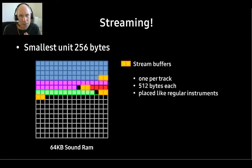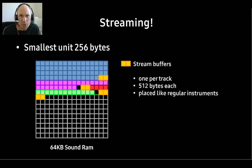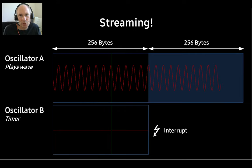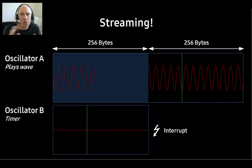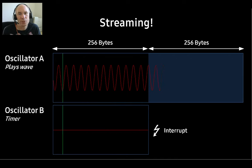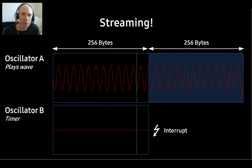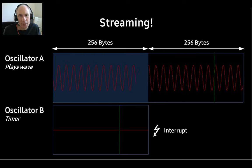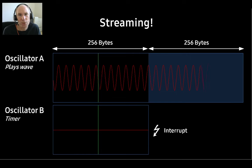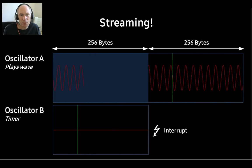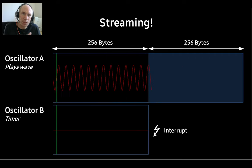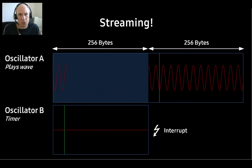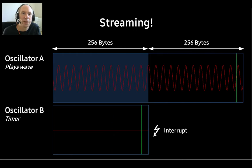If the instruments just don't fit, NTP offers streaming. Streaming means that pieces of the instruments are copied into sound RAM while they are being played. For each track of a module, a stream buffer of 512 bytes is allocated, and for each streaming buffer, two oscillators are needed — A and B. Both are started at the same time with the same frequency in free run mode. A plays the wave — that's what is heard — while the next chunk of the instrument is copied into a fill buffer. B runs silently through only half the buffer, and when it reaches the end, it fires an interrupt as the signal that the buffer has to switch. In that way, instruments of any length can be played.